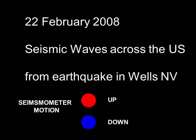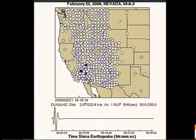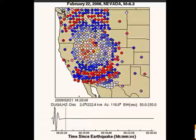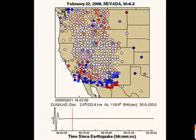On the 22nd of February 2008, an earthquake occurred in Wells, Nevada. Each seismic station is indicated by a circle. When the circle turns red, that indicates the seismometer moved up. When it turns blue, it indicates the seismometer moved down. This gives us a powerful visualization of how the earthquake waves traveled across the country.